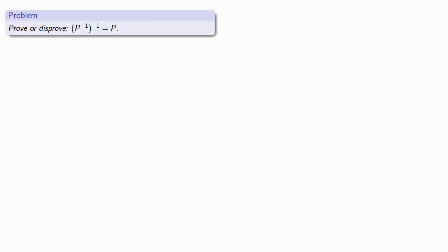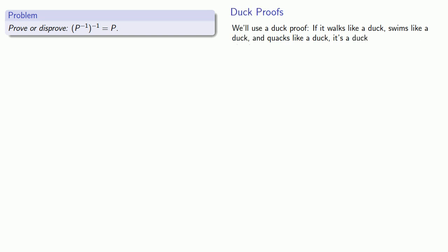Let's try to prove, or possibly disprove, that P inverse inverse is equal to P itself. For problems like this, we'll introduce a very serious and important mathematical concept: the duck proof. A duck proof is fairly simple — if it walks like a duck, swims like a duck, and quacks like a duck, it's a duck.